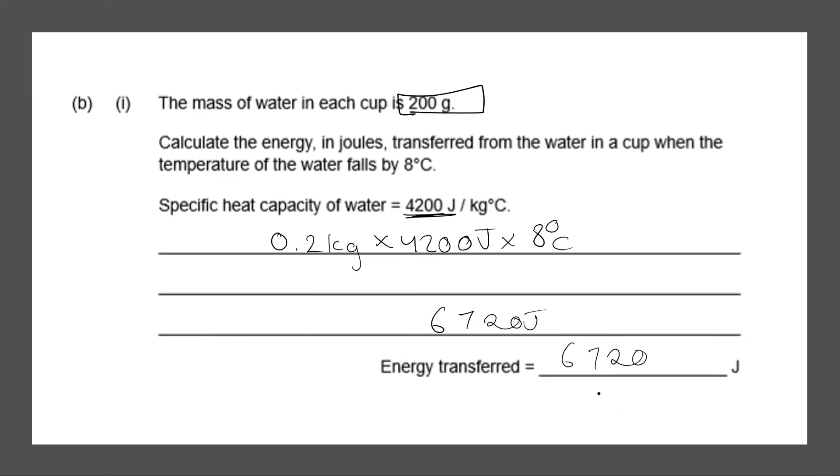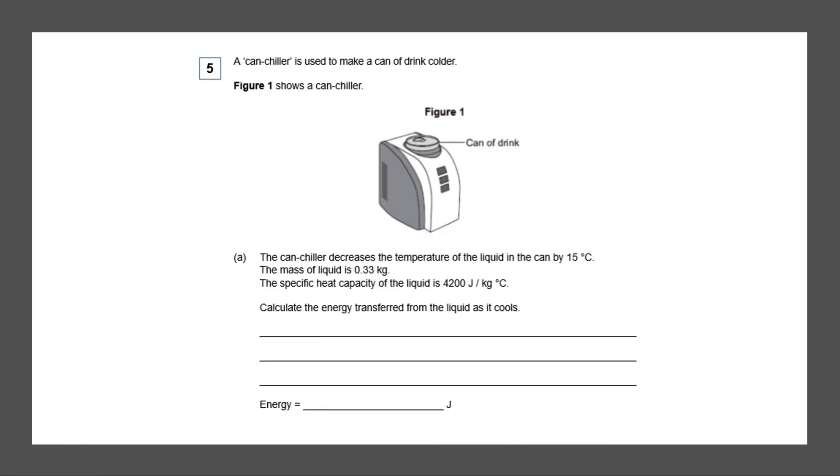Next question. A can cooler is used to make a can of drink colder. So this is the can cooler. The can cooler decreases the temperature of the liquid in the can by 15 degrees. The mass of the liquid is 0.33 kilograms. The specific heat capacity is 4200 multiplied by 4200 multiplied by the change in temperature which is 15.